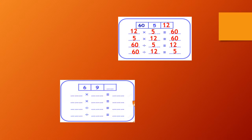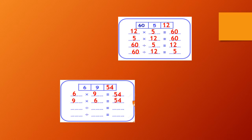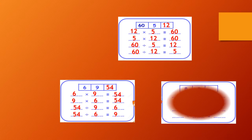6 and 9. 6 by 9 equals 54. So, 6 by 9 equals 54, 9 by 6 equals 54, and 54 divide 9 equals 6, and 54 divide 6 equals 9.